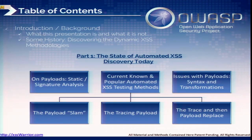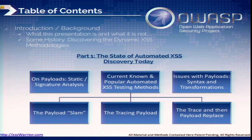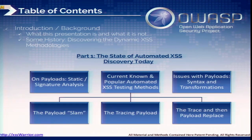The state of automated cross-site scripting discovery today is that for the most part, it's a signature static-based analysis with payloads. The three most general methods I'll go into are what I nicknamed the payload slam, the tracing payload — that's the most common way, probably what you're seeing today in your environment — and a trace-and-replace method. We'll briefly go over the issues with these techniques and then go into differentiating.